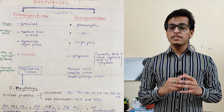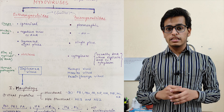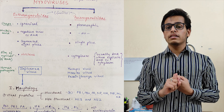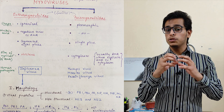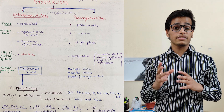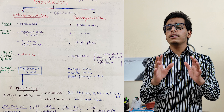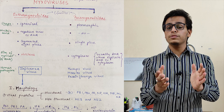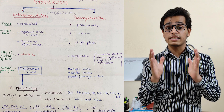Orthomyxoviruses are spherical in shape while the other one — paramyxoviruses — is pleomorphic. Regarding the site of replication of the genetic material: in orthomyxoviruses, the genetic material divides inside the nucleus, while in the other it divides in the cytoplasm. Fun fact — all major RNA viruses divide their genetic material in the cytoplasm, so orthomyxoviruses are an exception.